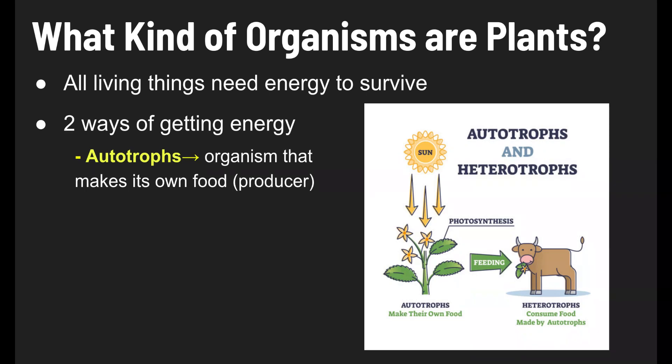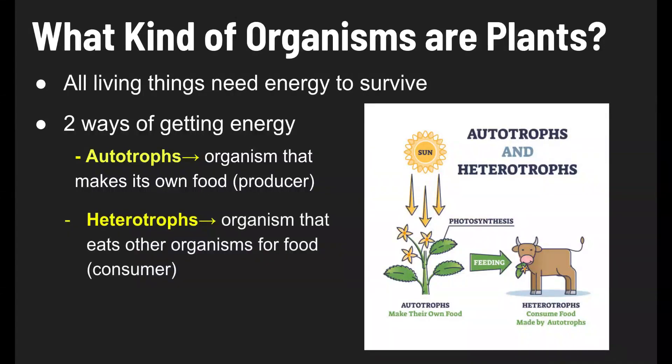Autotrophs are organisms that make their own food — they're producers. Heterotrophs are organisms that eat other organisms for food. These are consumers.